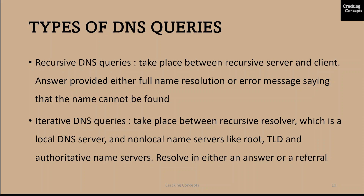Next is an iterative DNS query. This takes place between the recursive resolver, which is a local DNS server, and the non-local name server like the root, TLD or authoritative name server. Iterative queries do not demand a name resolution. The name server may instead respond with a referral. The root server refers the recursive server to the TLD, which refers it to the authoritative server. The authoritative server provides the domain name to the recursive server if it has it. Iterative queries resolve in either an answer or a referral.